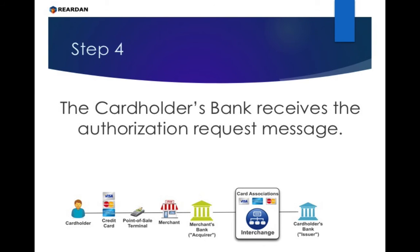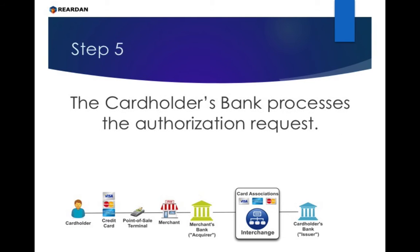Step 4: The cardholder's bank receives the authorization request message. Step 5: The cardholder's bank processes the authorization request. It's at this point in the process where the customer's bank wants to make sure that the card itself is a good card — it's a valid credit card — and that the customer does have enough money in his account to pay for the purchase.